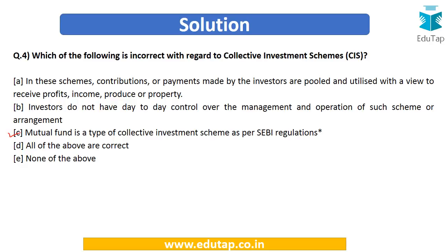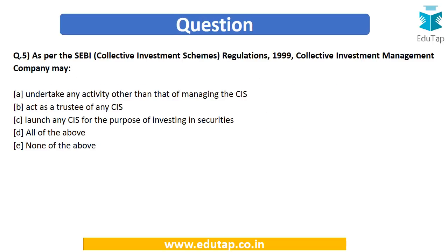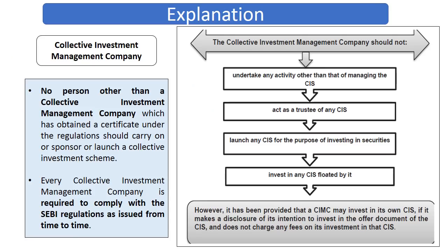The fifth question asks: as per the SEBI Collective Investment Schemes Regulations 1999, a collective investment management company may — options are: (A) undertake any activity other than managing the CIS; (B) act as a trustee of any CIS; (C) launch any CIS for the purpose of investing in securities; (D) none of the above; or (E) all of the above. To answer, we must understand what a collective investment management company can and cannot do.